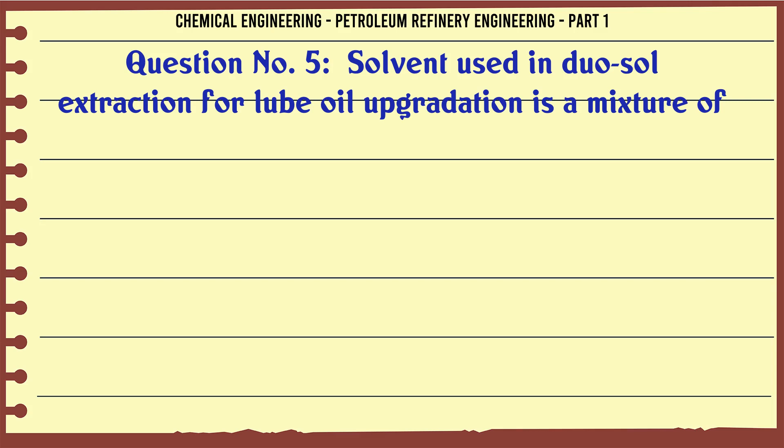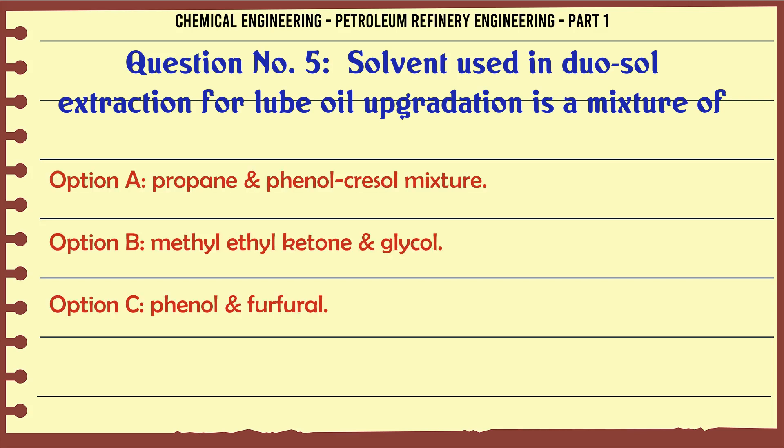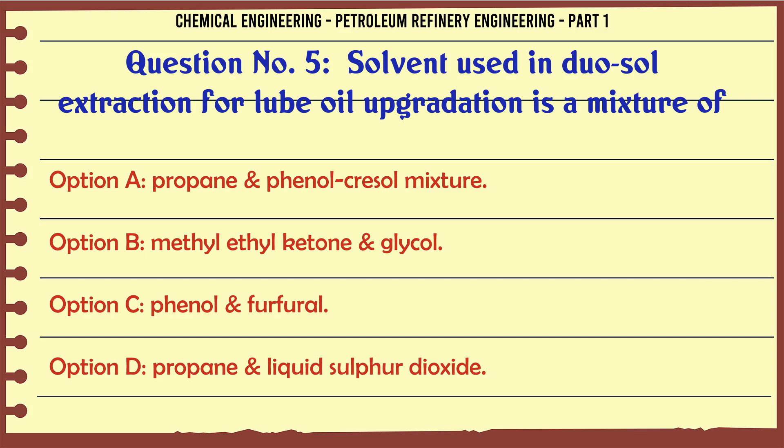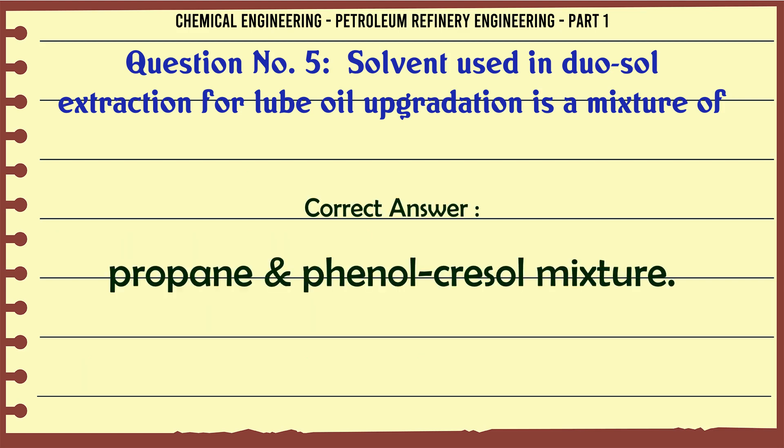Solvent used in duosol extraction for lube oil upgradation is a mixture of: A. Propane and phenol cresylic mixture, B. Methyl ethyl ketone and glycol, C. Phenol and furfural, D. Propane and liquid sulfur dioxide. The correct answer is Propane and phenol cresylic mixture.